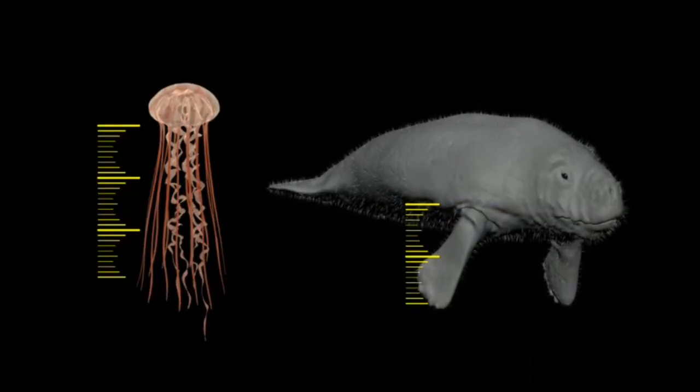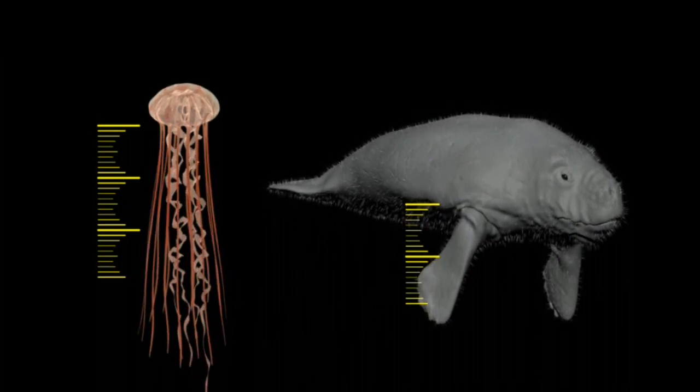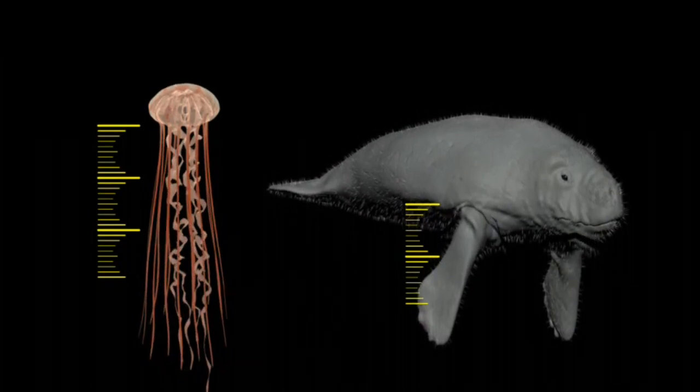It describes how fast some aspects or characteristics of an organism changes. One Darwin is a factor of 2.7 every million years.